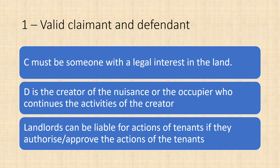The first thing we need to do in any application of private nuisance is to consider who the claimant is. This is a person who has a legal interest in the land — so usually, after Hunter v Canary Wharf, this is somebody who has ownership of the land or is a tenant. The defendant is the creator of the nuisance, which can happen in a number of ways: it can be the occupier who continues the activities of the creator, or defendants who come to land unaware but then don't do anything to stop the nuisance happening. Landlords can also be liable for the actions of tenants if they authorise or approve those actions.